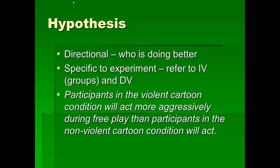Now that's the main thing about IVs, DVs, and the basics of experiments. A hypothesis needs to be directional — meaning which condition is doing better or worse — and specific to the experiment, meaning you have to refer to the independent variable and the dependent variable. A good hypothesis for our example would be: participants in the violent cartoon condition will act more aggressively during free playtime than participants in the nonviolent cartoon condition.